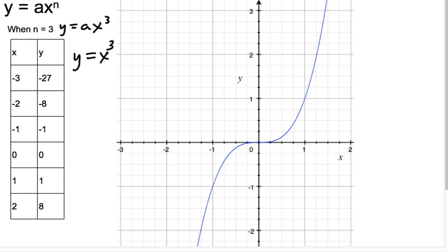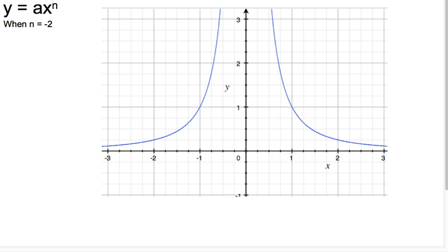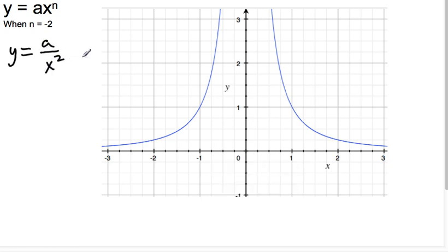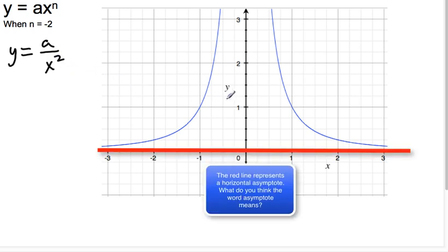Now we're going to go ahead and go in the other direction for a different type of graph. And so this is when n equals negative 2. So when n equals negative 2, if you remember when dealing with negative exponents, then what this is going to look like is y equals a over x squared. So this is what it looks like when you're dividing by that x squared.